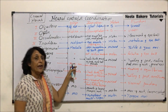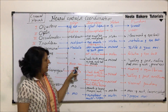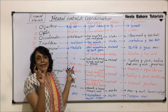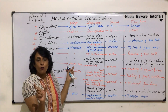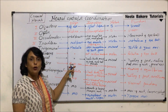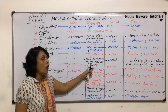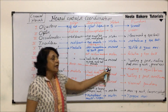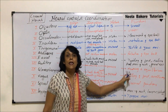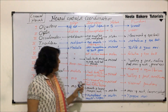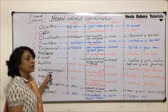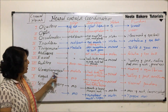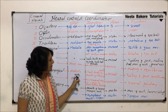Auditory is the eighth cranial nerve. The first, second, and eighth are all sensory nerves. It arises from the internal ear — specifically from the organ of Corti in the cochlea — and goes to the medulla. Being a sensory nerve, its functions are hearing and equilibrium.